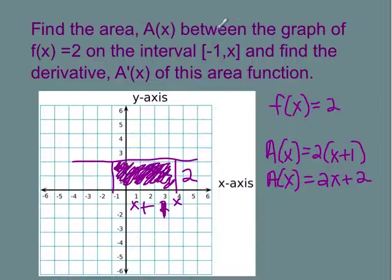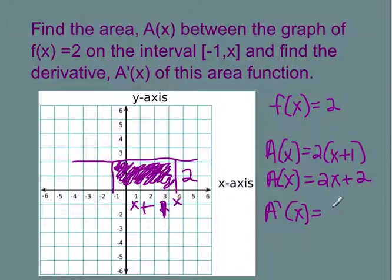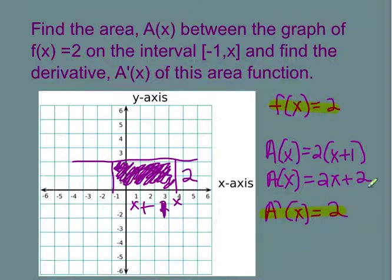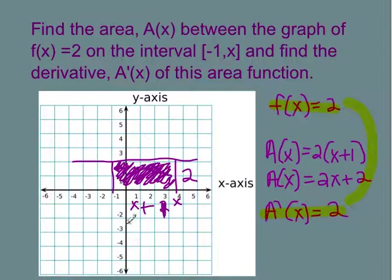So I just found the area function, and now I need to take the derivative of this. The derivative of 2x plus 2 brings you right back to 2. What I want you to pay attention to is we started with f of x equals 2, and look what the derivative of the area comes out to be — it ends up being the same value. This is that huge connection showing how integrals, the area under the function, tie into the derivative.